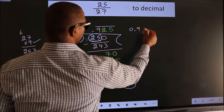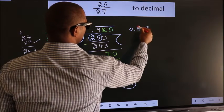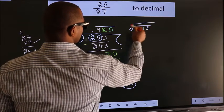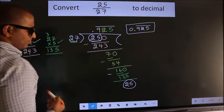Therefore our answer is 0.925 with a bar on these three numbers. This is our answer.